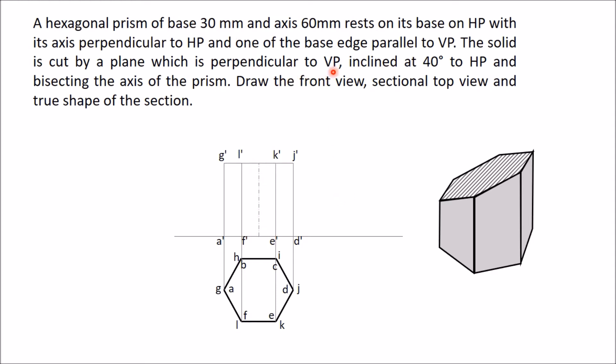Since the section plane is perpendicular to VP, it will appear as a line in front view. Now this section plane is inclined at 40 degrees to HP and bisecting the axis. So take the middle point of this axis and from this middle point draw a line at an angle of 40 degrees which is representing the section plane.